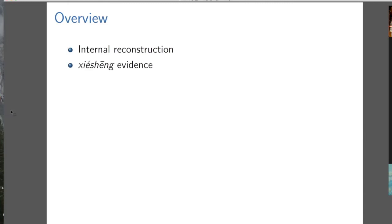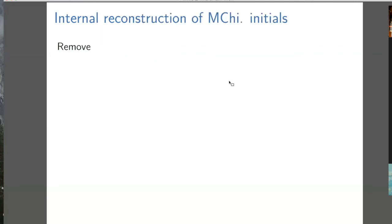When you rhyme things, you're using the vowel and the coda of a syllable, not the initial. The poetic device that would be useful for studying initials would be alliteration, but Chinese hasn't used alliteration in a systematic way like Old English did. So it's only internal reconstruction and Xie Xiong evidence that helps us reconstruct the initials.